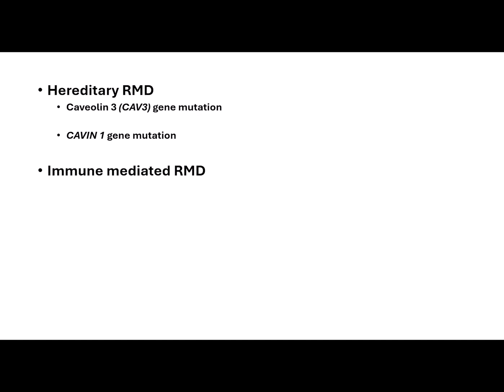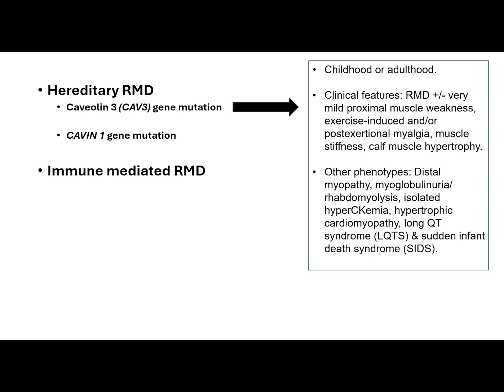Rippling muscle disease can be hereditary or immune-mediated. Hereditary rippling muscle disease is caused by mutations in caveolin-3 or cavin-1 genes. The onset of caveolin-3 rippling muscle disease is usually in childhood or adulthood, and it has a wide spectrum of clinical phenotypes ranging from asymptomatic creatine kinase elevation to severe muscle weakness.